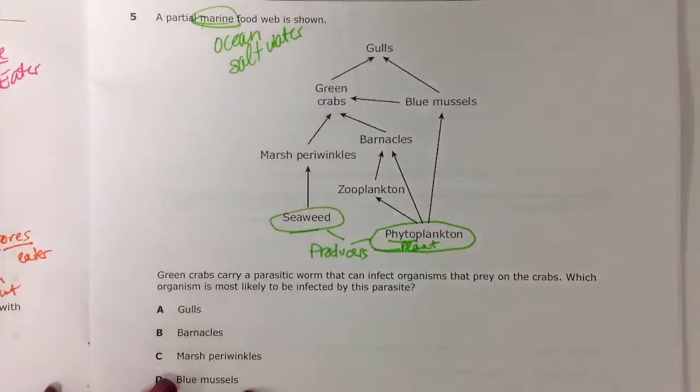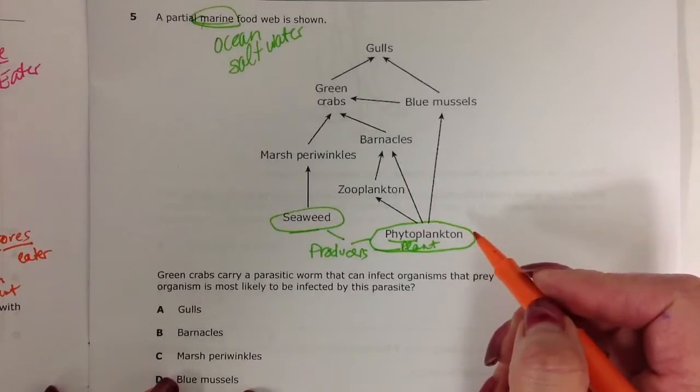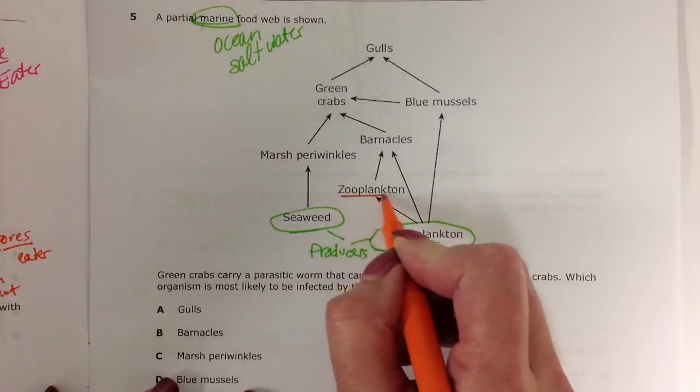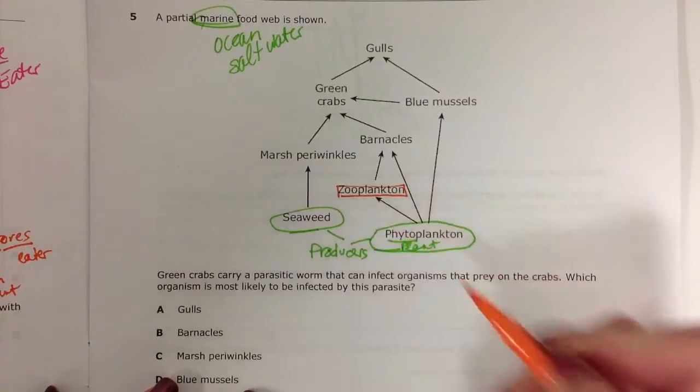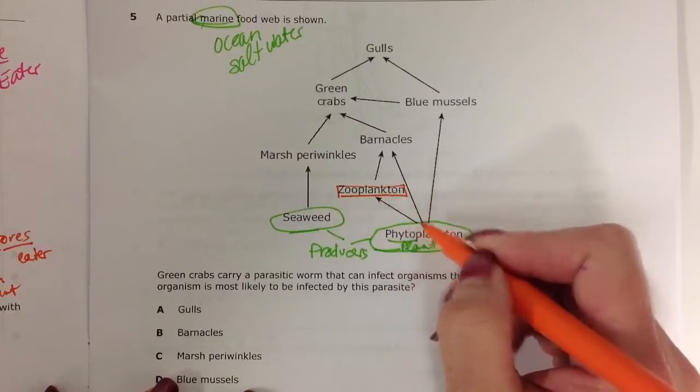We have things that feed off our producers, such as zooplankton, which is a herbivore. It only feeds off the producer.